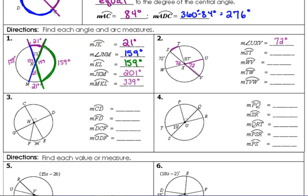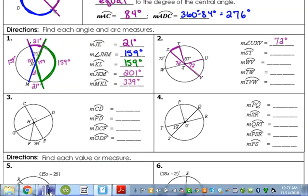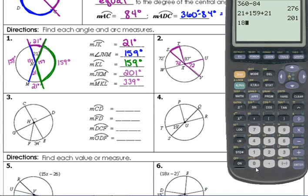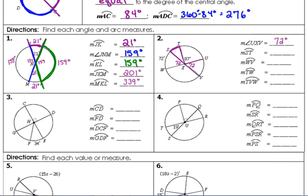Arc ST. We need this little piece. It goes with this angle right here. It looks like SV is a diameter, so that gives us half. So 180 minus 87 minus 72 gives us 21 for the angle, 21 for the arc.